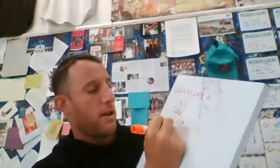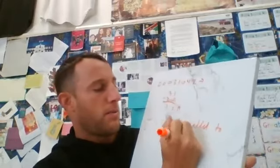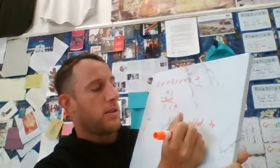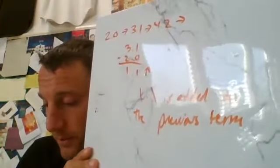So on this one, it'll say 1.1, 1.1 is added to the previous term. That's really all it is. It's super straightforward. You're just going to find the difference between the numbers as they go up, and then you're going to solve that.